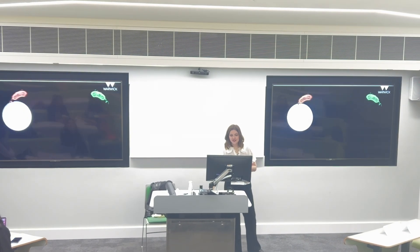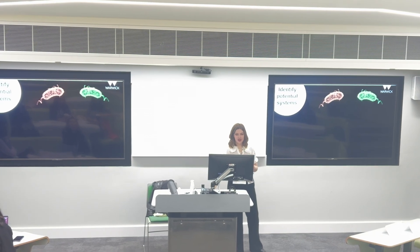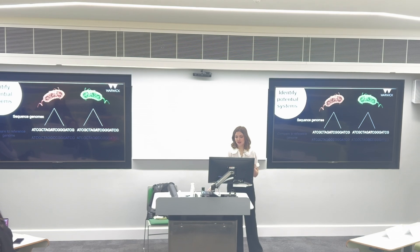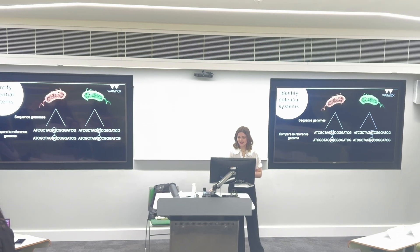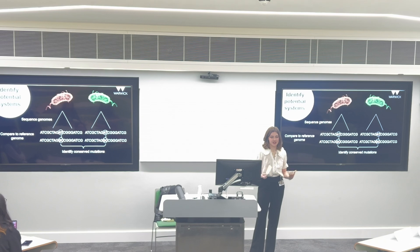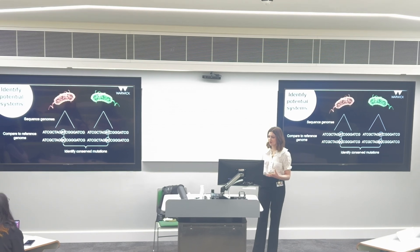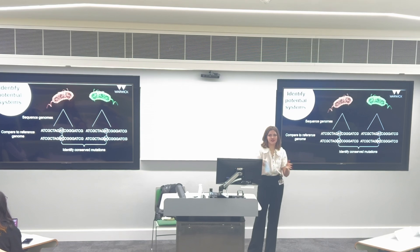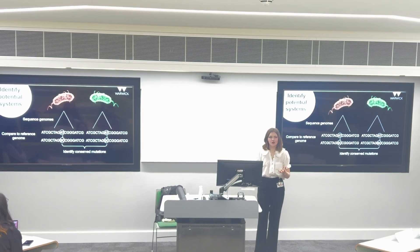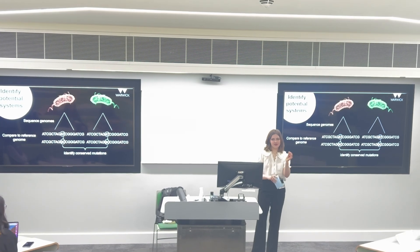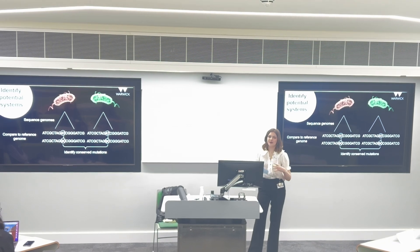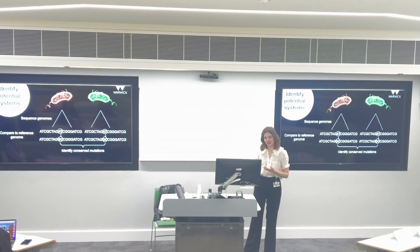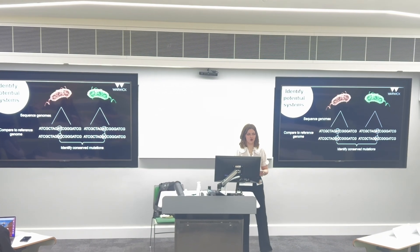Once you have these resistant mutants, you can identify potential defense systems within their genomes by sequencing — reading the string of A's, T's, C's and G's that make up their genome and genetic material. Once you have this, you can identify mutations that are conserved across resistant mutants. The logic is: if the same mutations appear in lots and lots of resistant strains of bacteria but are not present in susceptible strains, there's a good chance that gene is going to play a role in resistance.